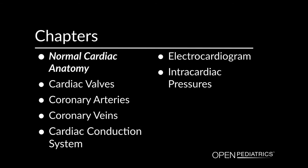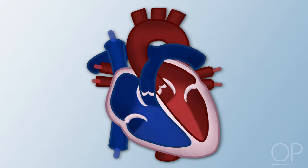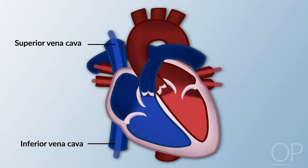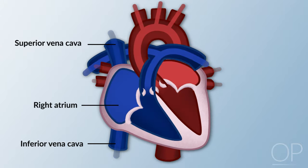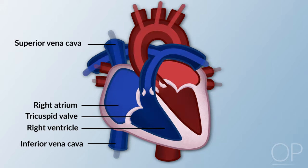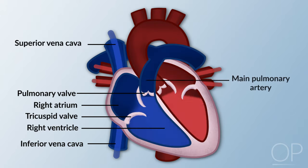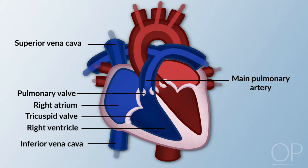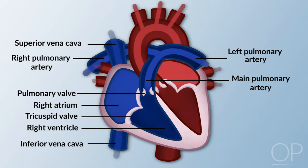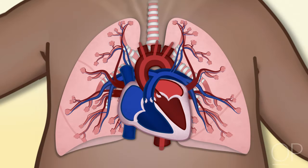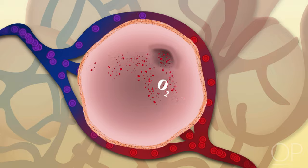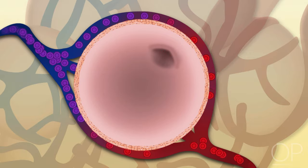Normal Cardiac Anatomy. The right side of the heart receives venous blood from the body through the superior and inferior vena cava, which enter the right atrium. Blood flows through the tricuspid valve into the right ventricle. Blood leaves the right ventricle through the pulmonary valve into the main pulmonary artery. The pulmonary artery divides into right and left pulmonary arteries to transport deoxygenated blood from the right side of the heart to the right and left lungs. The pulmonary arteries branch further into the pulmonary capillary bed where oxygen and carbon dioxide exchange occurs.